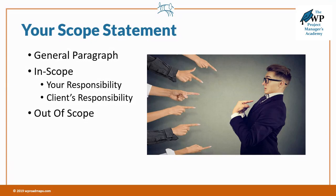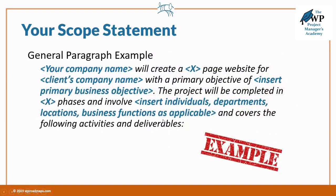Your out-of-scope section is going to come from your project plan template and your initial pre-proposal discovery, because you're basically going to take the activities and tasks you normally do for a website and eliminate the ones that are out of scope. For the general statement, your company name will create a certain number of page website — or if you don't know the number of pages, just say your company will create a website for the client's company with a primary objective based on your business requirements.